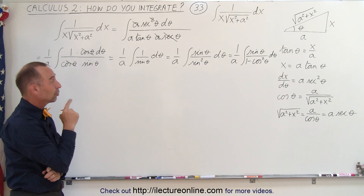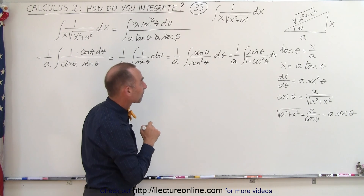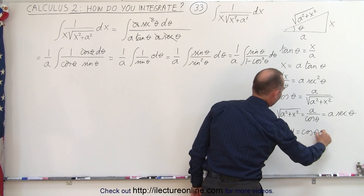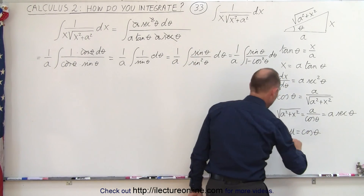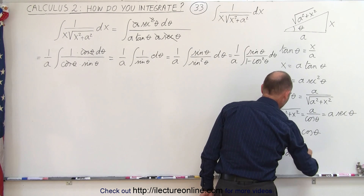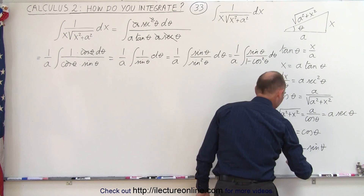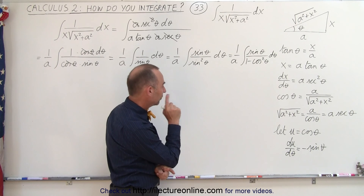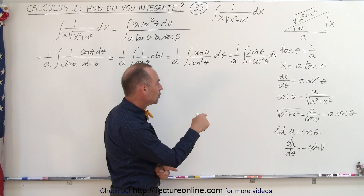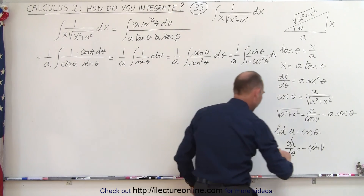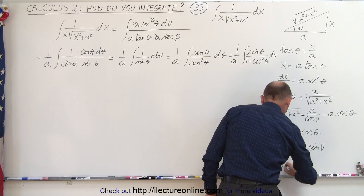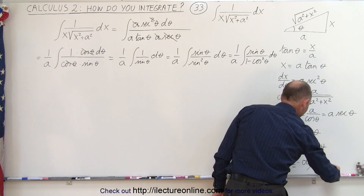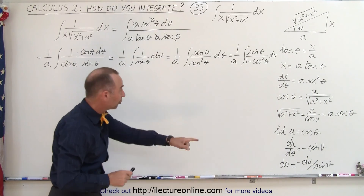Now we're ready to do a substitution. If we let u equal the cosine of theta, then du/dθ is the negative sine of theta, which means dθ can be written as negative du over the sine of theta. So now we have the proper substitution to rewrite that integral.